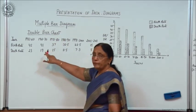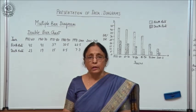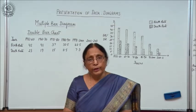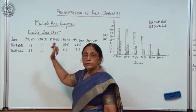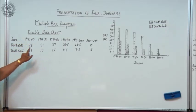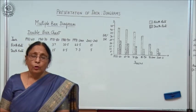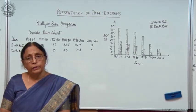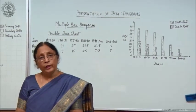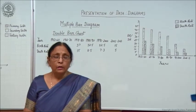Now this is the example I have taken for double bar chart. In the double bar chart, two variables are given. That means whenever you have to compare the data of two variables, this double bar chart is drawn. For example, if you are comparing birth rate and death rate, or export and import, double bar diagrams are more suitable.